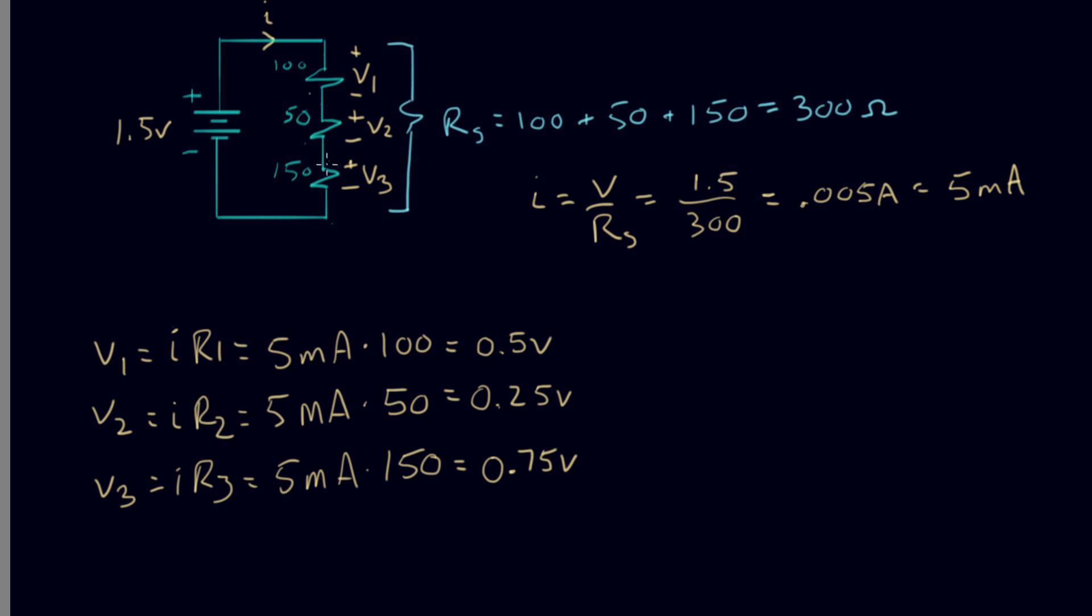So we've solved the voltage and the current on every resistor. So this circuit is completely solved. And let's do one final check. Let's add this up.